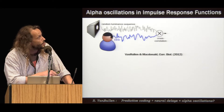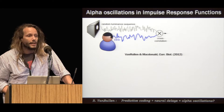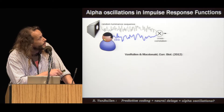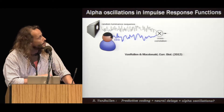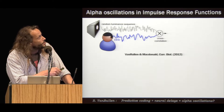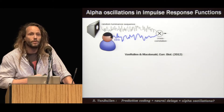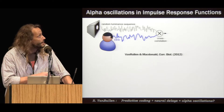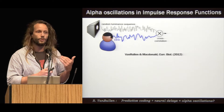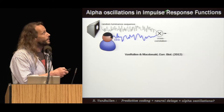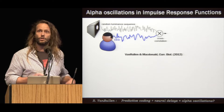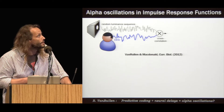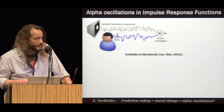So what's an impulse response function? It is calculated by cross-correlating a brain signal — for example, EEG — with a random stimulus, for example a white noise luminance sequence. If the brain signal is systematically modulated by the input stimulus, then this relation should be visible as a significant correlation with a particular temporal lag.